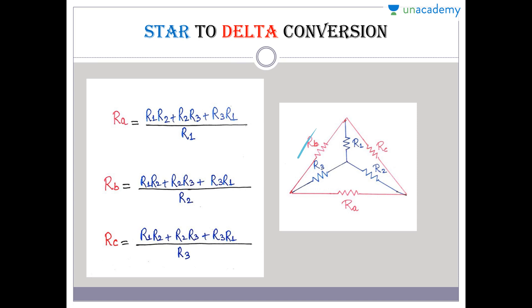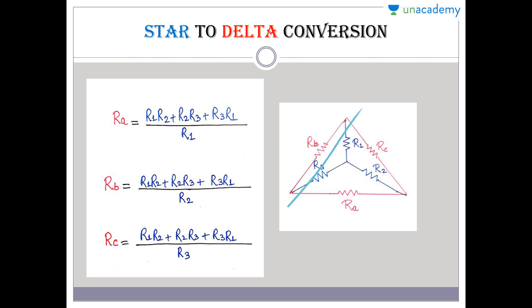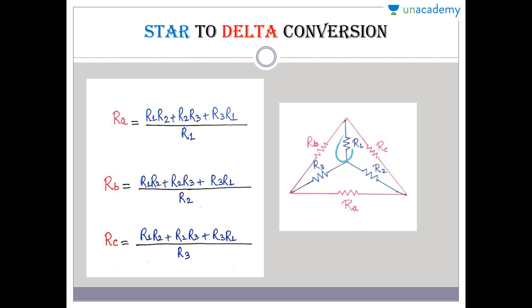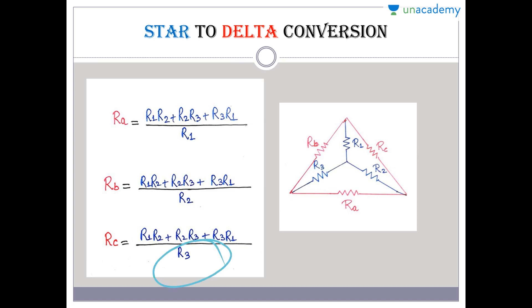Similarly, to find R_B: write the equivalent resistance R1·R2 + R2·R3 + R3·R1 in the numerator, and divide by the opposite star resistance. The opposite branch of R_B in the star is R2, so we put R2 in the denominator. To find R_C: same numerator, divided by R3, which is the star branch opposite to R_C. In this way you can identify R_A, R_B, and R_C from a star connection.